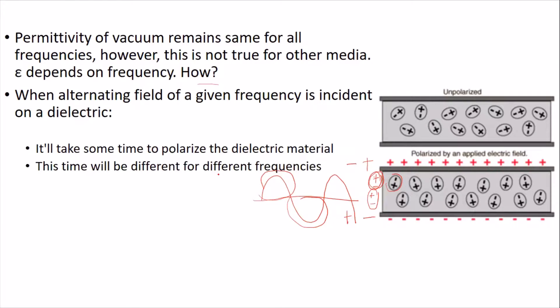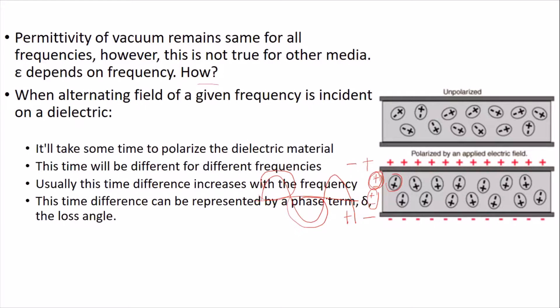This time will be different for different frequencies. Usually, this time difference increases with the frequency, and this time difference can be presented by the phase term delta, which is called the loss angle. The tangent of this loss angle is called tangent delta, and this is called the loss tangent.